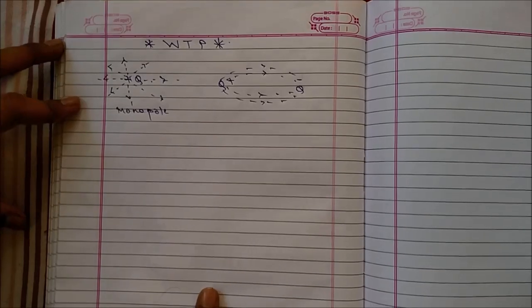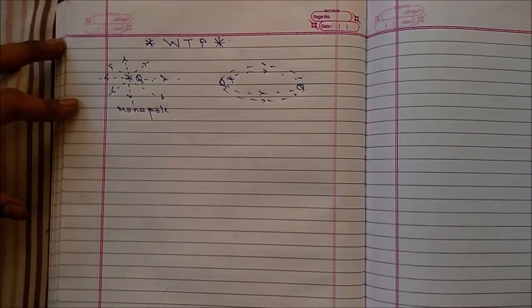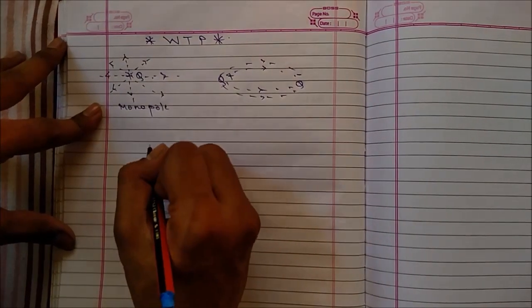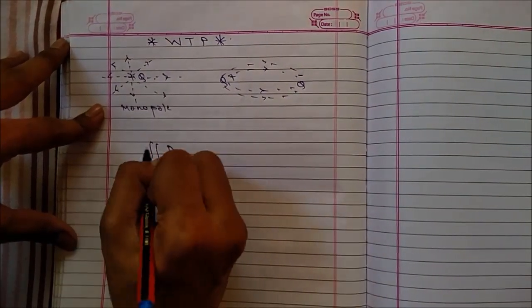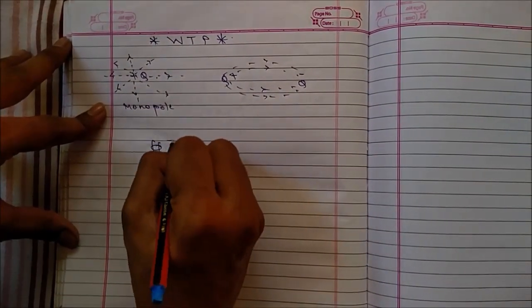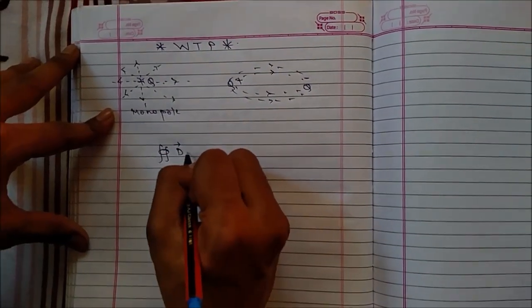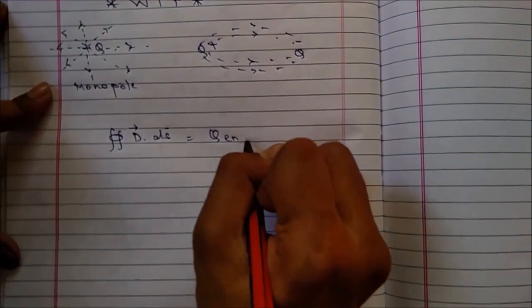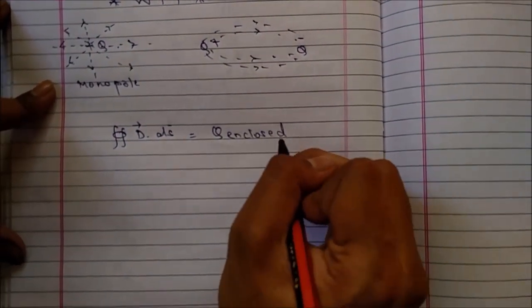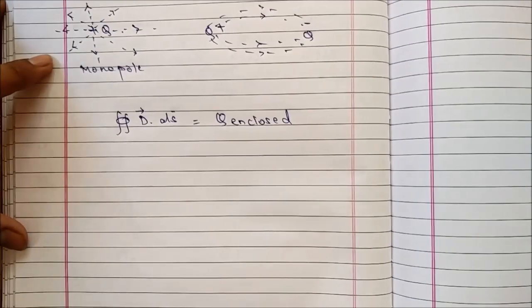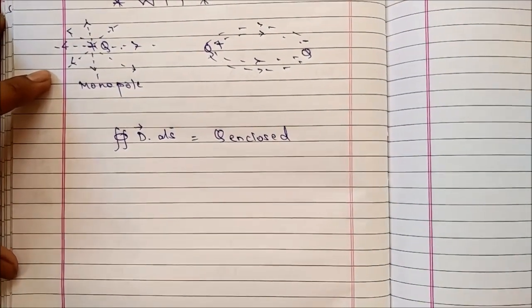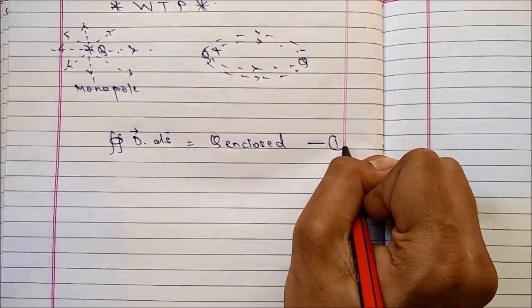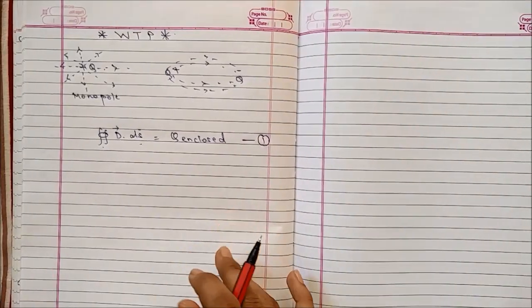Mathematically, Gauss's law states that the closed surface integral of electric flux density vector is equal to the charge enclosed. Consider this as equation number one.